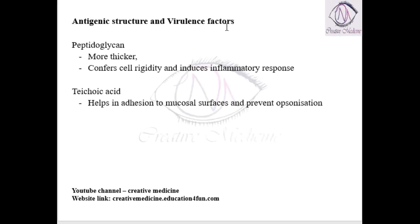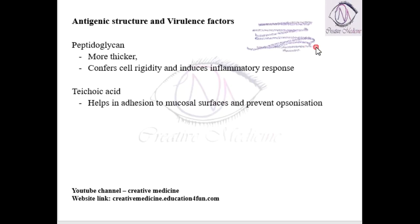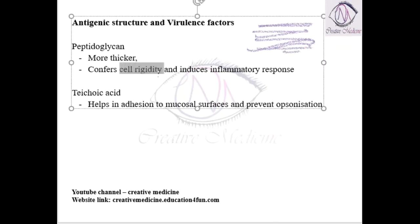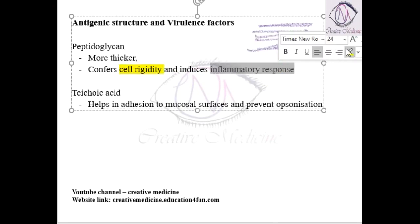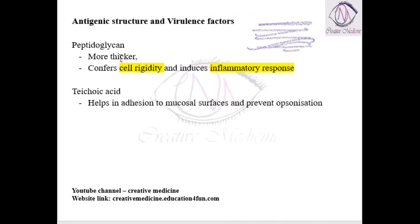In the gram-positive cocci, especially in the staphylococcus, we have different antigens. First, we have peptidoglycan, which is the cell wall component. In a gram-positive cell wall, the peptidoglycan is thicker, and it is important for cell rigidity. It will also induce an inflammatory immune response.